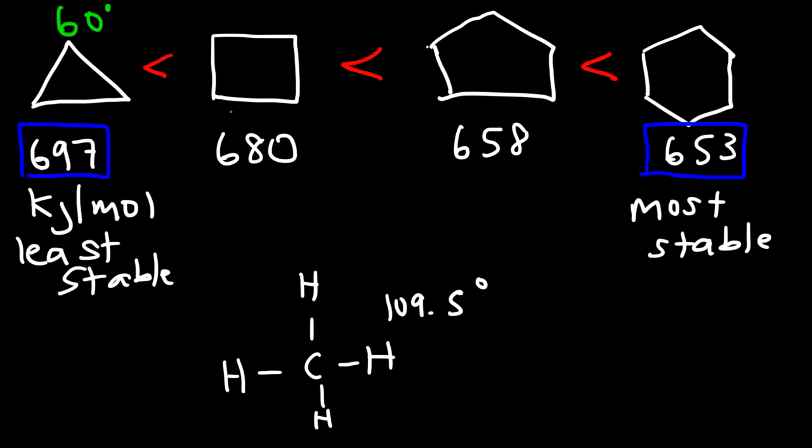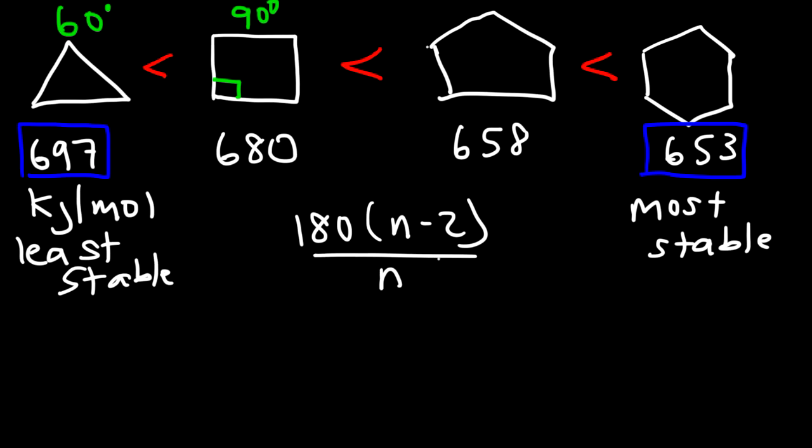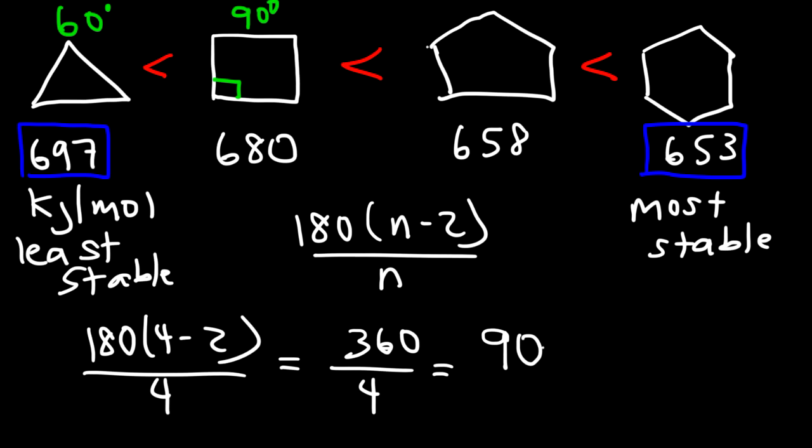Now in a case of cyclobutane, you can see that this looks like a square, so the angles are 90. Now there's another way in which you can calculate the interior angle of a polygon. And so you can use this formula, 180 times n minus 2 divided by n, where n is the number of sides. In the case of this triangle, n is 3. So it's 180 times 3 minus 2 over 3. 3 minus 2 is 1. 1 times 180 is 180. Divided by 3, that gives you 60. In case of the square, or for cyclobutane, it has four sides. So n is 4. 4 minus 2 is 2. 180 times 2 is 360. 360 over 4. Well, we know that 36 divided by 4 is 9. So that becomes 90.